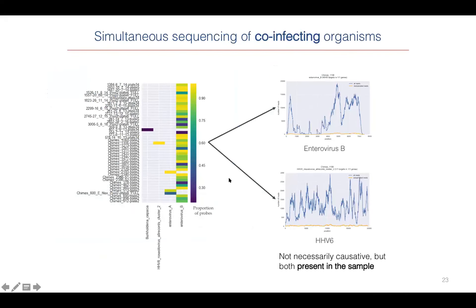You can also look at co-infections, and this is really where the power of the metagenomic panel comes in — it's quite possible for a single patient sample to contain more than one pathogen, and there's no guarantee both are causative. But if there is evidence both can be causative, they will both be in the panel. This is a very clear case of potential co-infection, flagging enterovirus B and HHV6. It's almost certain that enterovirus B was the cause, and HHV6 may be a bystander — but both are in the panel, both are enriched, and effectively both are sequenced.